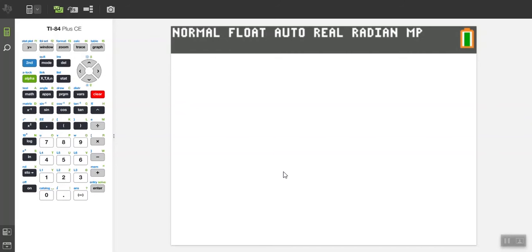In class I gave you a list of perfect squares and perfect cubes to help you simplify radicals. Let me show you how to create those lists on your own.